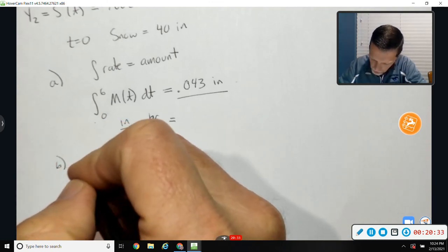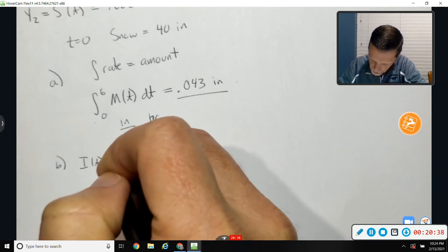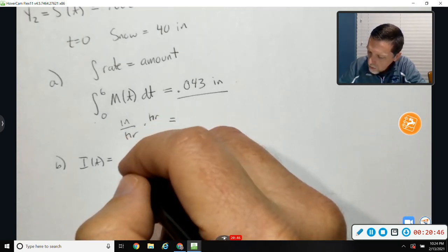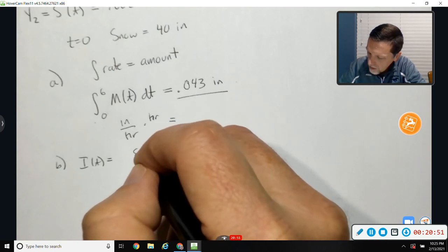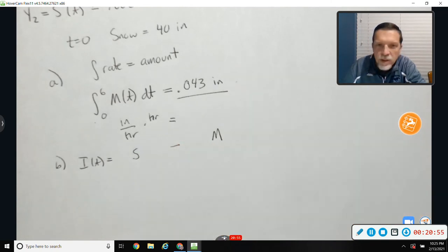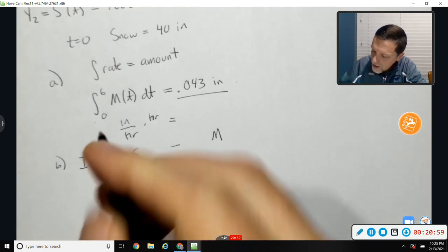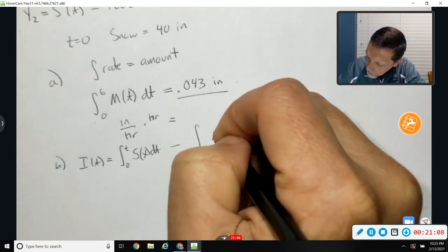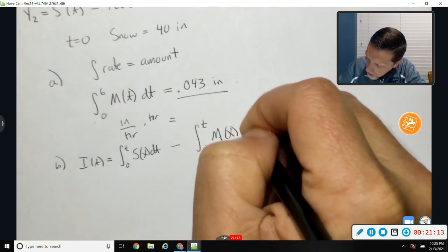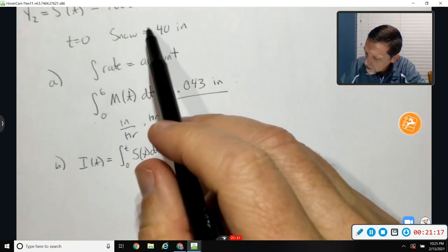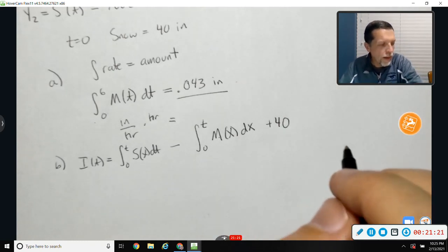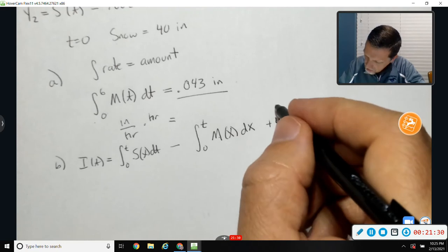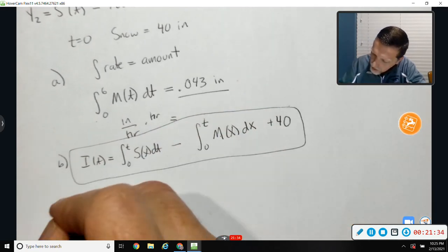Part B, write an expression for I, the total number of inches of snow at any time T. So I is how much snow there is. I think I would, I've got to have the amount that's snowed minus the amount that's melted. But this is an amount, and these are rates. So I need to integrate the rate from 0 to T. Integrate the melting rate from 0 to T. And then, this is where it told me they're started at 40, so I just need to add 40 to that. And that would be my expression. Write an expression. Done.